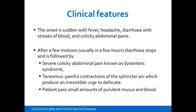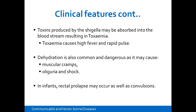Because of the release of toxins, we normally have fever, headache, and diarrhea. Because of the destruction of the mucosal layer and epithelium, we have streaks of blood and colicky abdominal pains. After a few motions, the diarrhea stops and is followed by very severe abdominal pain, then tenesmus, and then the patient passes small amounts of purulent mucus and blood. The toxins may be absorbed into the bloodstream resulting in toxemia, which causes high fevers and rapid pulse. Dehydration is also common and dangerous due to the destruction of the colonic membrane and loss of fluids, leading to cramps.